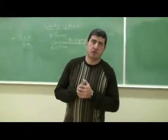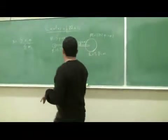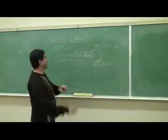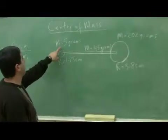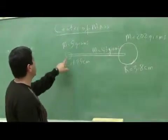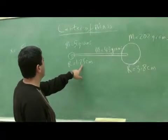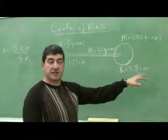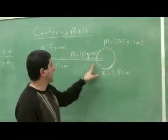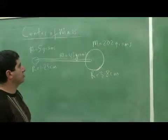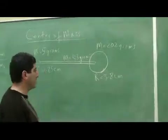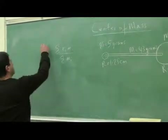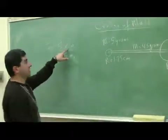Now we're going to do a demo on center of mass. I have an object comprised of piecewise different objects. We have a sphere with a mass of 5 grams and a radius of 1.25 centimeters. We have a rod with a mass of 43 grams. Then I have a big heavy sphere with a mass of 202 grams and a radius of 3.8 centimeters. I'm going to find the center of mass of this conglomerate object by doing a summation.